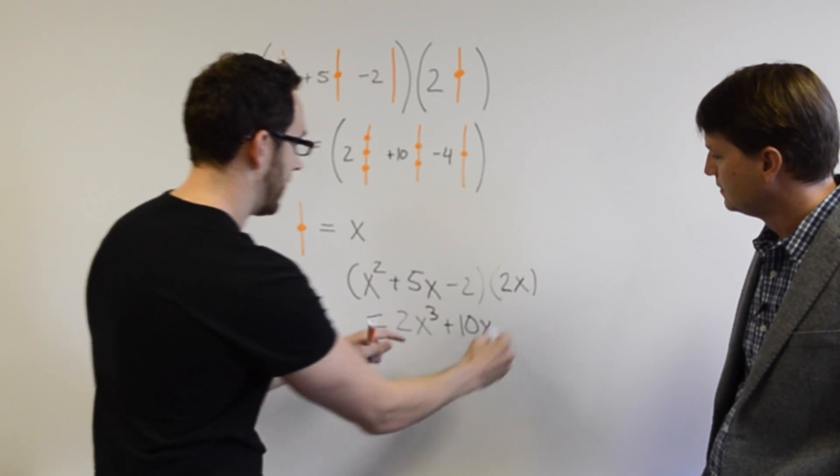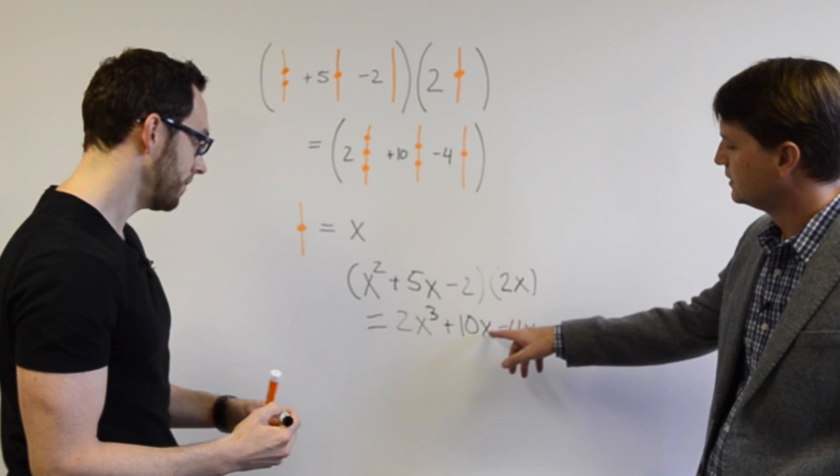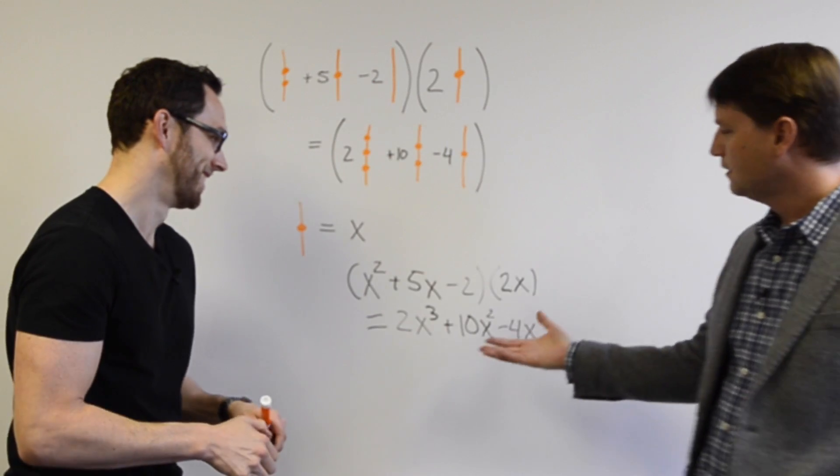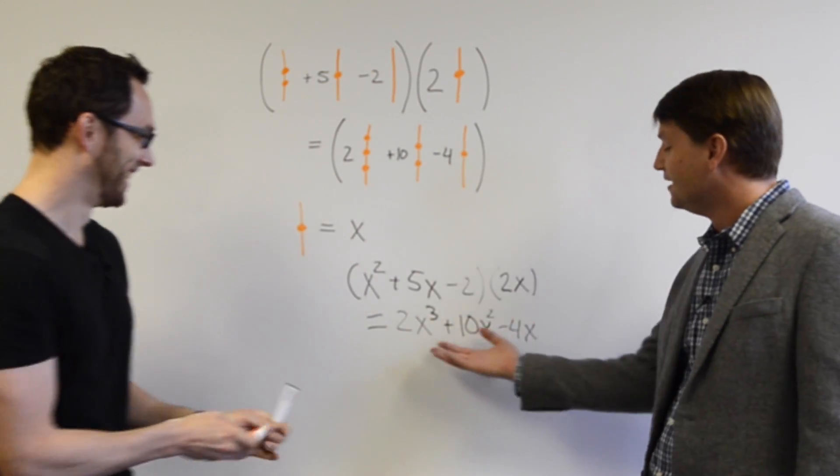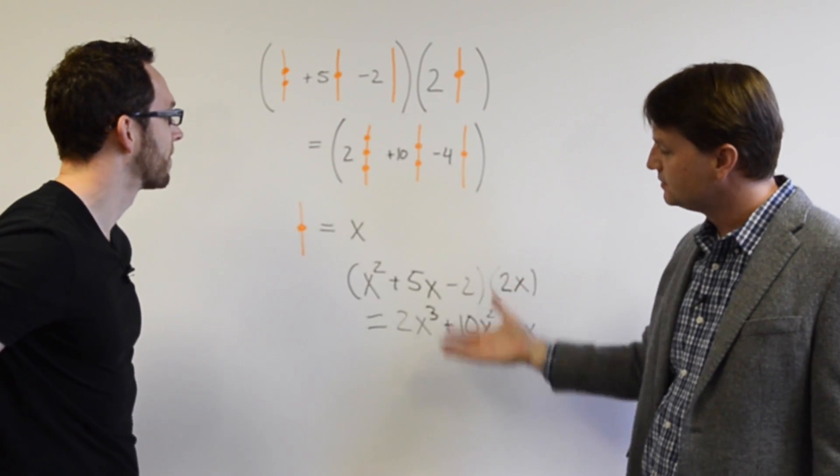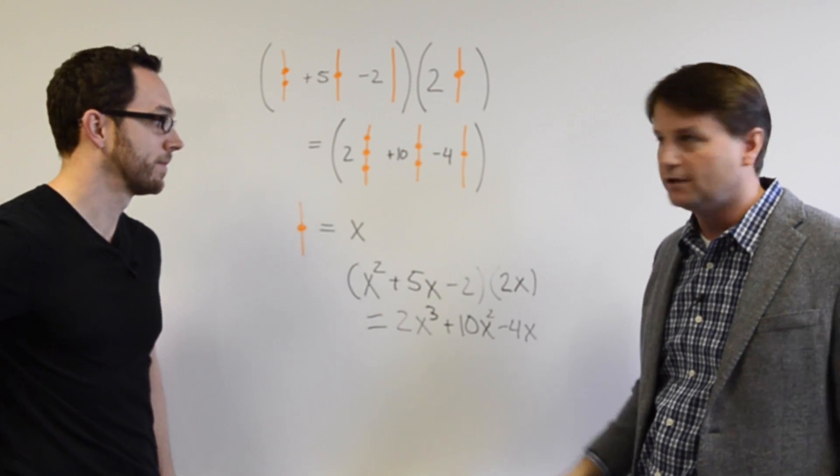When you try and solve this, you get 2x³ plus 10x² minus 4x. And if you watch with the pictures, when I multiply this by this, I got three dots. In terms of pictures, all I did was stack this one on top and multiply the coefficients. So this is just a pictorial representation of what we're doing when we multiply two polynomials together.